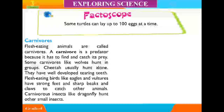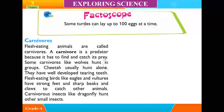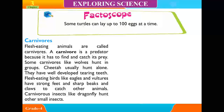Carnivores. Flesh-eating animals are called carnivores. A carnivore is a predator because it has to fight and catch its prey. Some carnivores like wolves hunt in groups; cheetahs usually hunt alone. They have well-developed tearing teeth. Flesh-eating birds like eagles and vultures have strong feet and sharp beaks and claws to catch other animals. Carnivorous insects like dragonflies hunt other small insects.